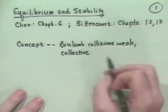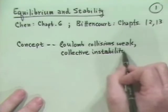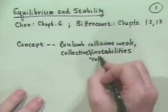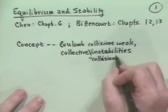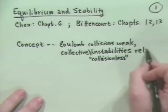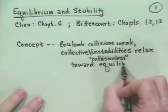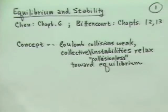By collective, we mean the whole plasma or group of particles act together, not just individual particles. So collective collisionless instabilities — or more or less collisionless — relax the plasma toward some form of equilibrium. This is not going to be as clean a process as Coulomb collisions. Rather, it's a question of what kinds of instabilities there are and how they might cause the plasma to relax back to some equilibrium.